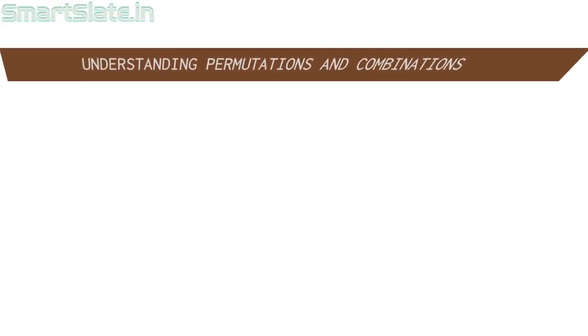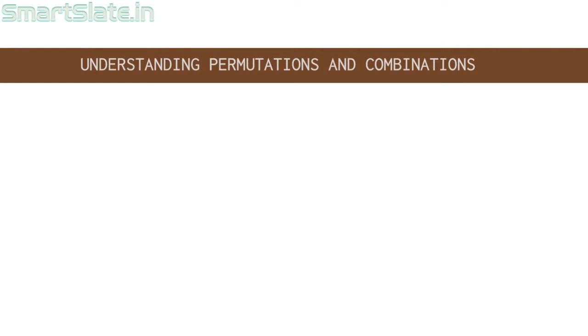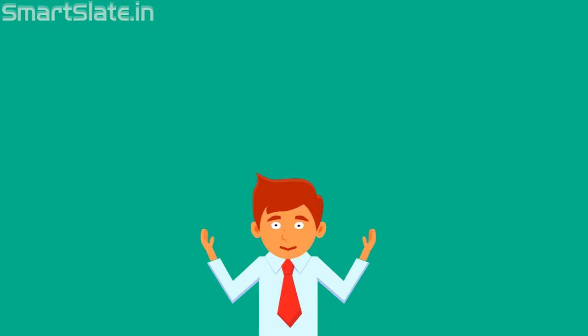Understanding permutations and combinations. Permutations and combinations are mathematical concepts which help us in counting. These concepts are based on the fundamental principle of counting. Many students struggle to understand them. In this chapter, I will try to explain the difference between these concepts, so that hopefully you will be able to understand when to apply permutations and when to apply combinations while solving problems.